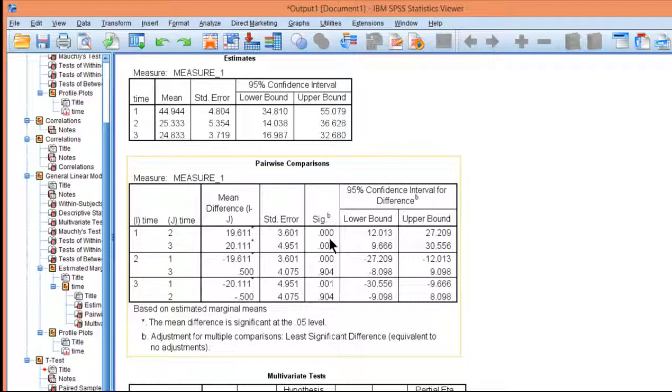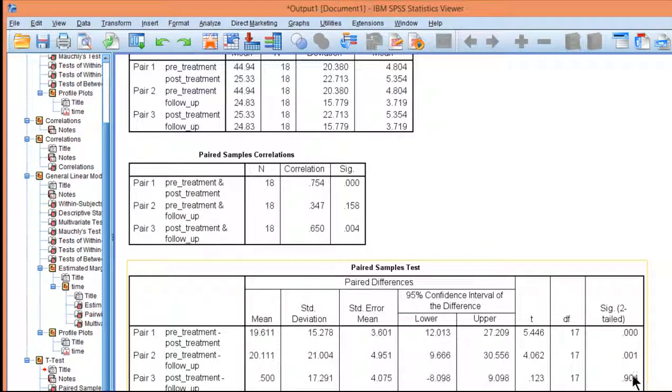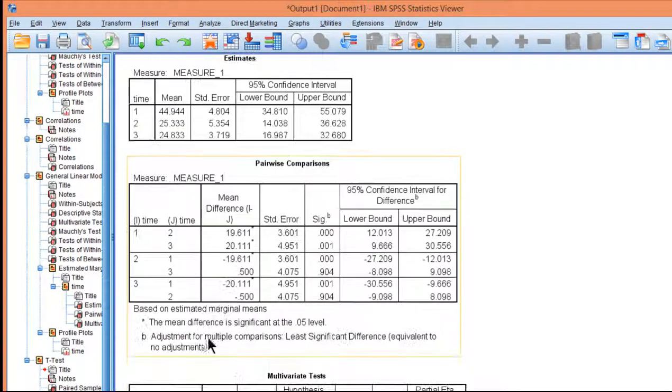So time 1 time 2 is 0.000, time 1 time 3 is 0.001, and then time 2 and time 3 is 0.904. And here you get the same p-values: 0.000, 0.001, and 0.904, all based on standard error terms that are unique to each comparison, not a pooled error term.